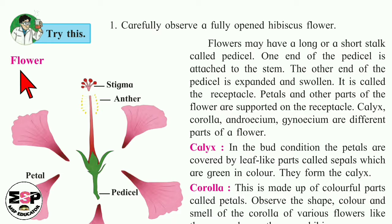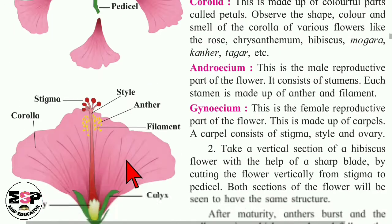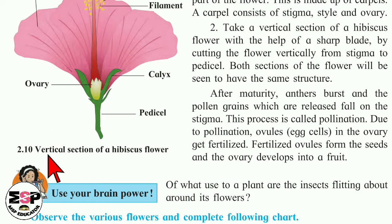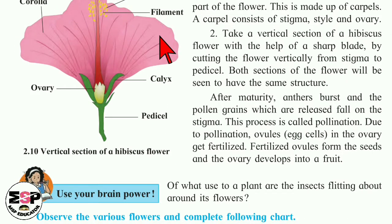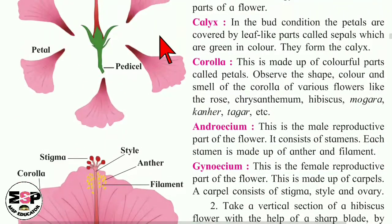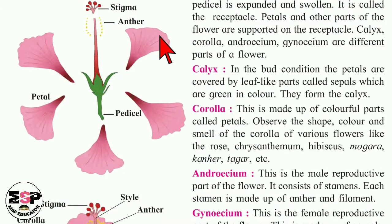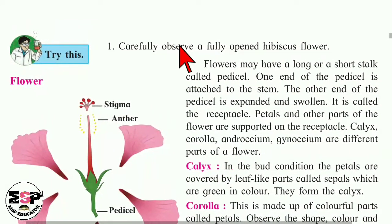There are two things you are going to do. First, carefully observe a fully open hibiscus flower. Here a figure is given to you — Figure 2.10, the vertical section of a hibiscus flower. We are going to observe all the parts one by one.